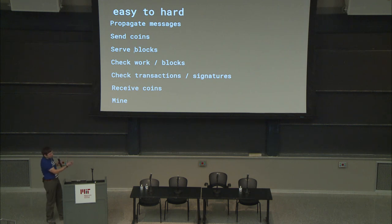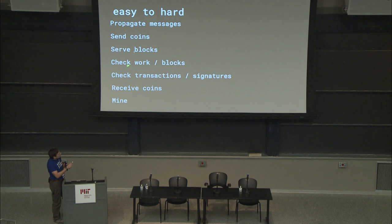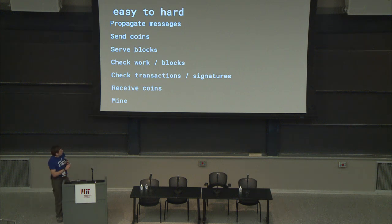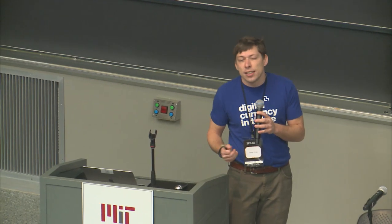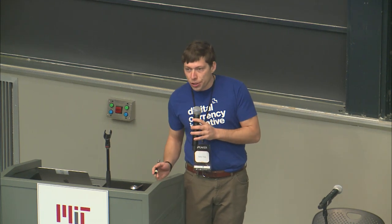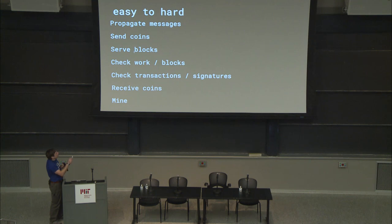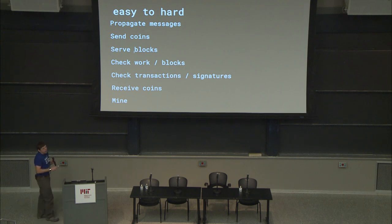We have this blockchain, and you can serve those blocks to people — if someone needs to know what happened in 2011, someone can fill them in. You can check work or check blocks, verify the proof-of-work consensus. You can check transactions and signatures. You can receive coins — which is actually much harder than sending them. And you can mine, generating new Bitcoins by mining a block, which is the hardest thing of all.